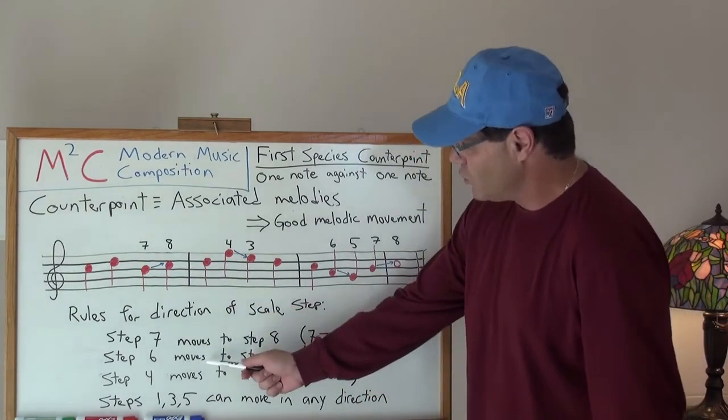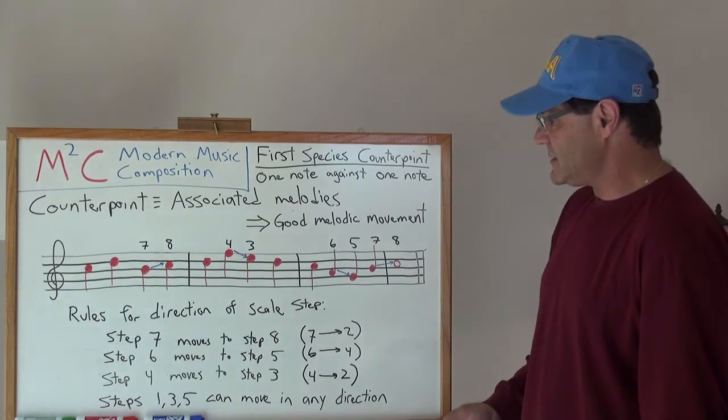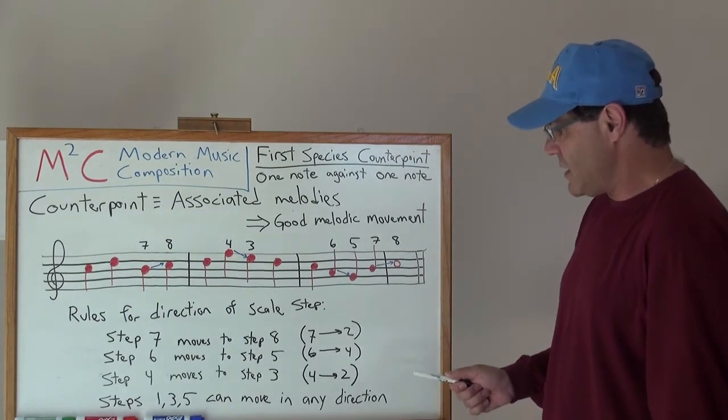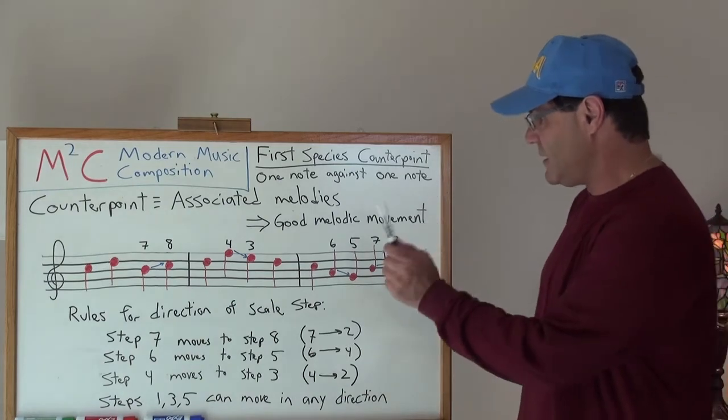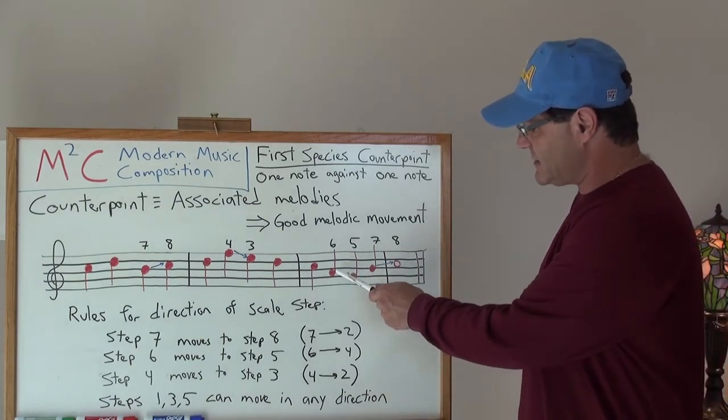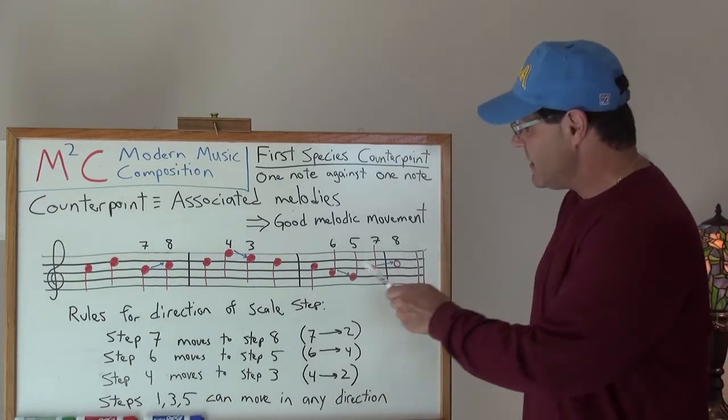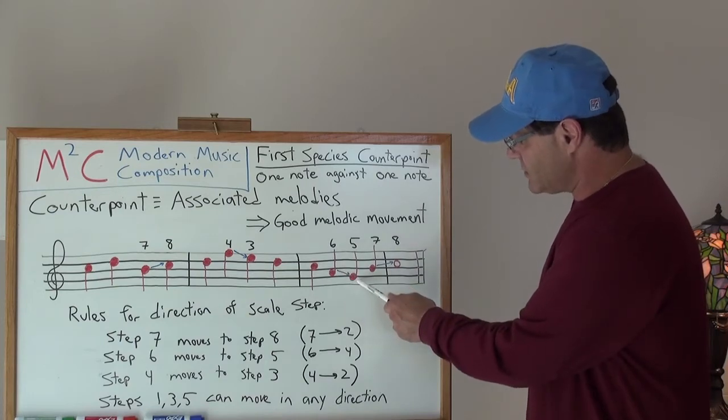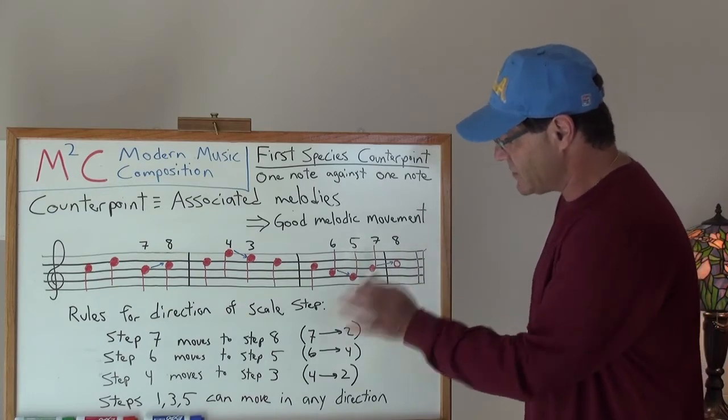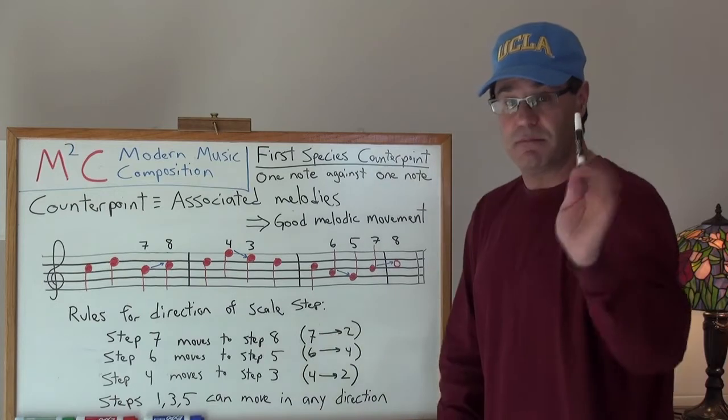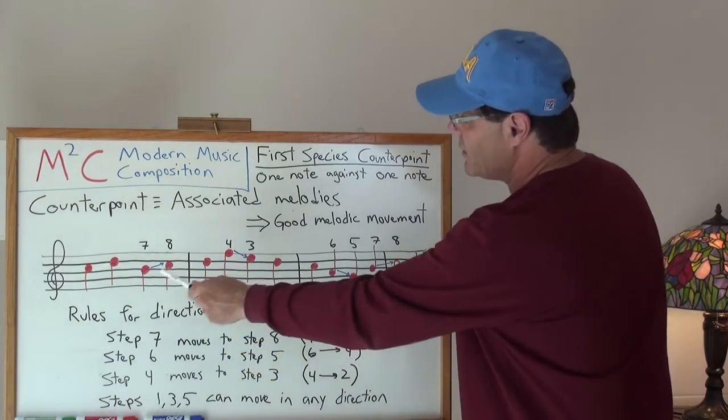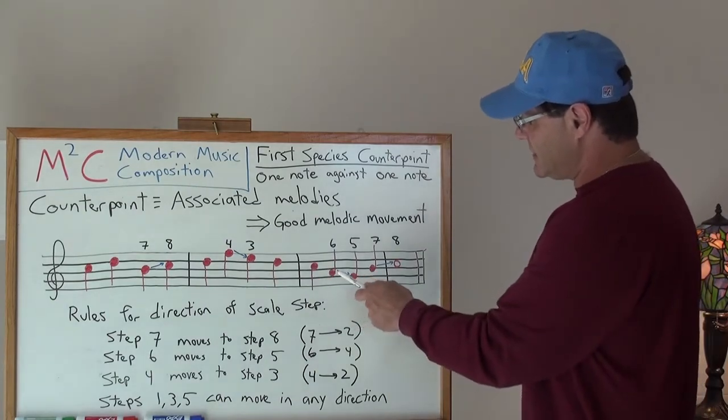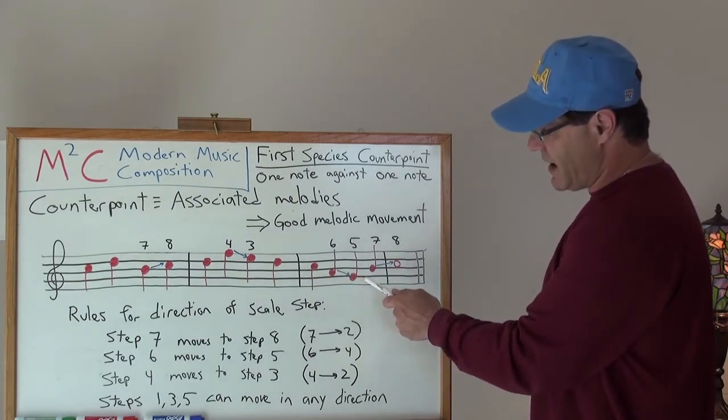The second rule is step six, which moves to step five. And if we're in the key of C, step six is an A, that's going to move down to five. So I'm sorry if I misspoke. Step seven moves, actually it moves up, it always moves up to eight. Step six always moves down to five.